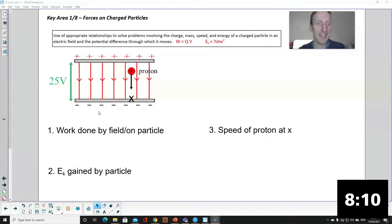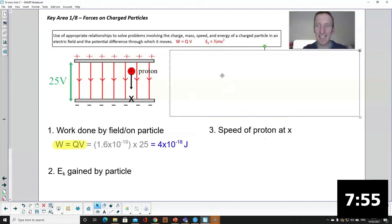Okay using W equals QV. So typical set questions for an electric field and the first thing would be to work out the work done by the field. It might be worded as the work done on the particle. That's where you use W equals QV. Q is the charge of the particle. In this case it's a proton.